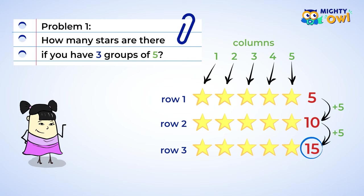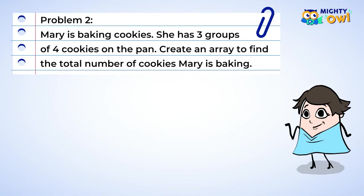You're on a roll. Keep going. Mary is baking cookies. She has three groups of four cookies on the pan. Can you create an array to find the total number of cookies Mary is baking?